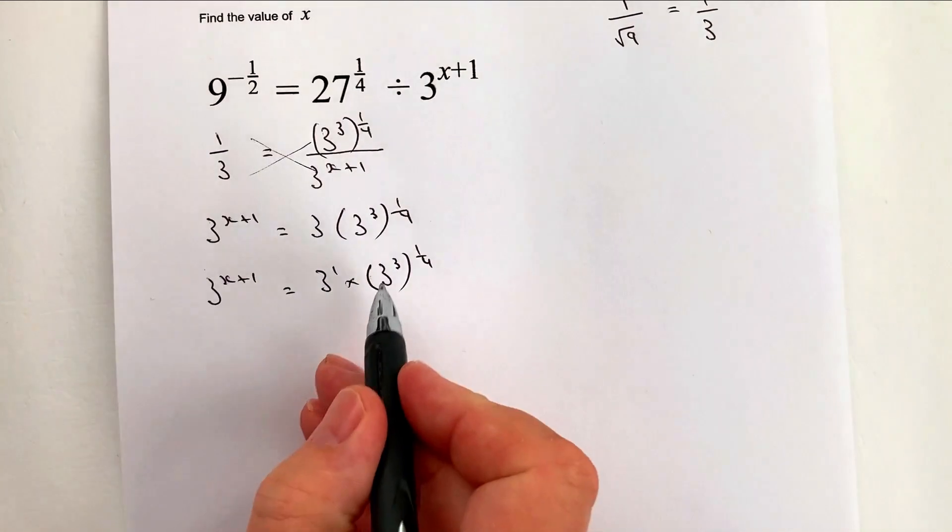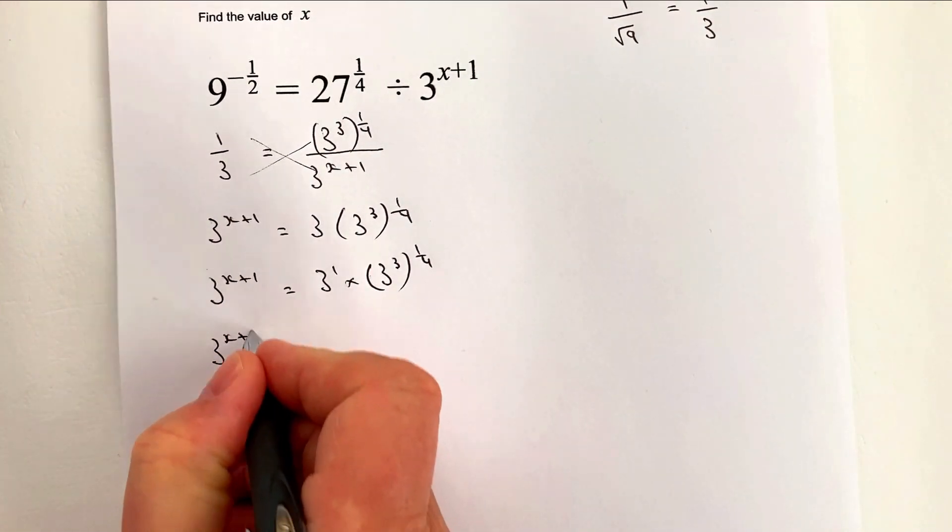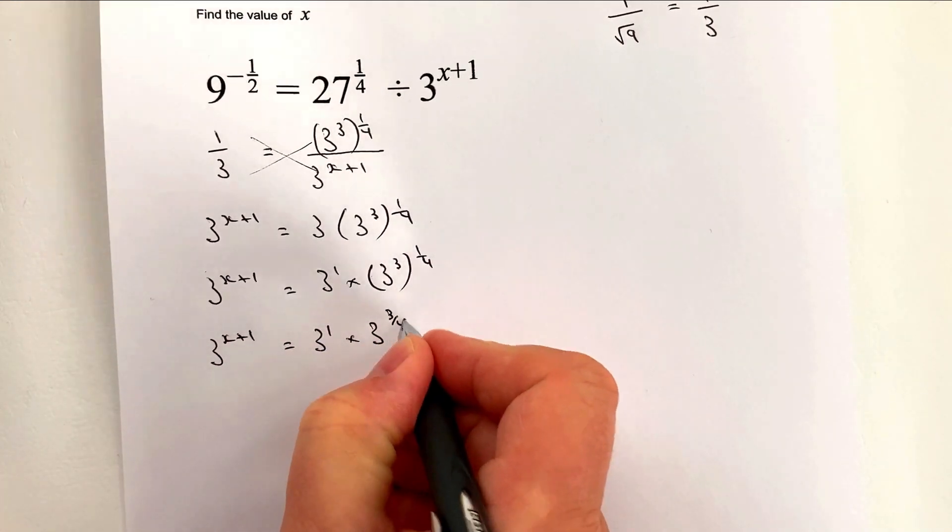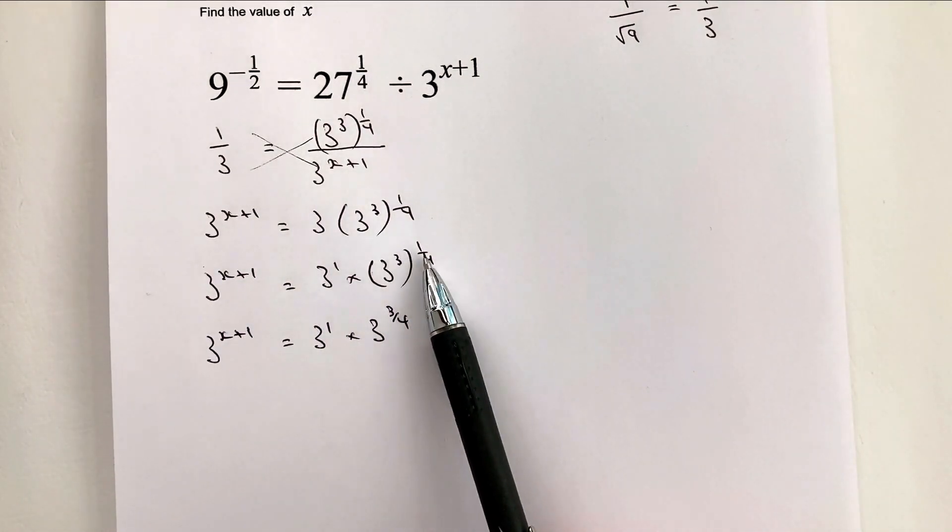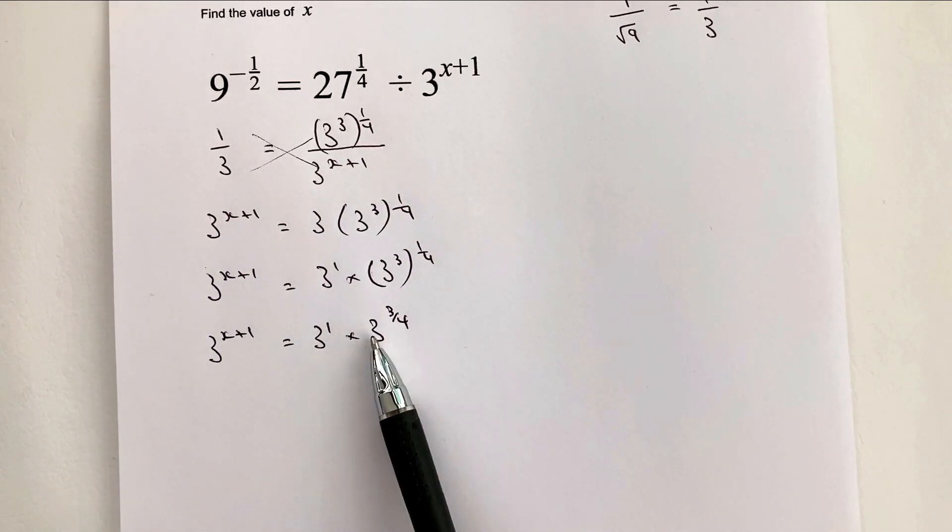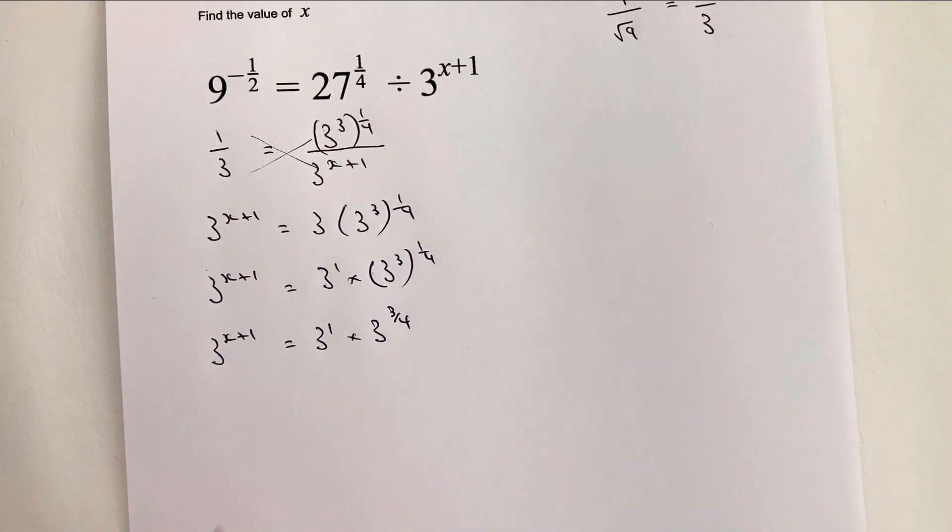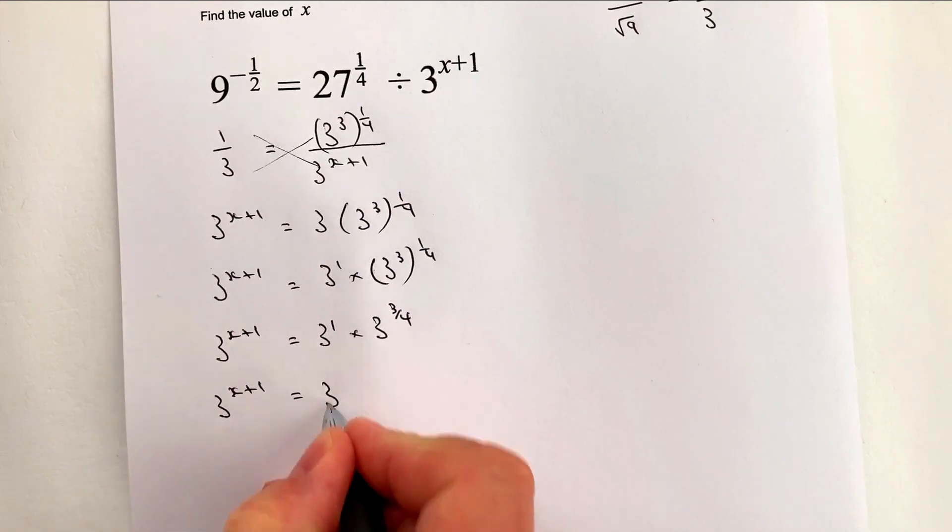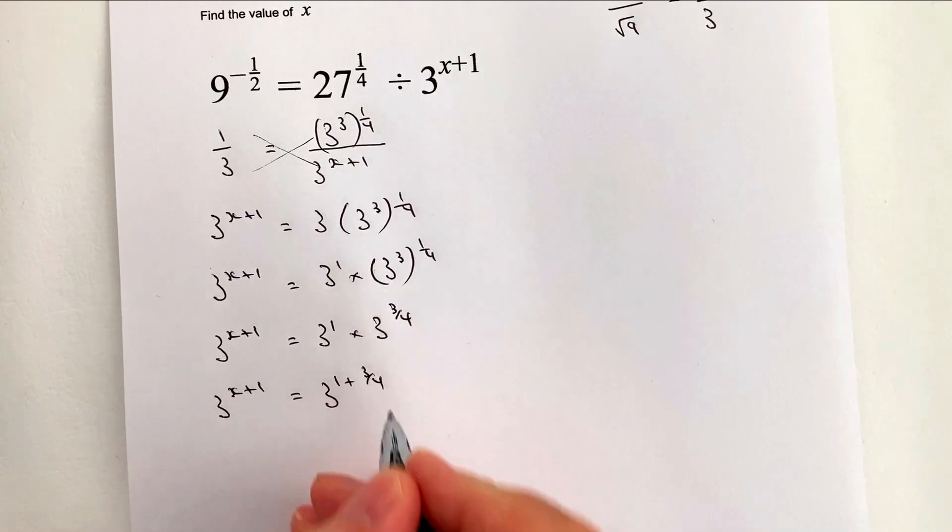So because I'm multiplying these two together. So I've got 3x plus 1 equals 3 to the 1 times 3 to the power of 3 quarters. So I've multiplied these two indices together. So when we are multiplying base numbers together, we add the indices. So by inspection, I can basically see this is 3x to the 1 equals 3 times, and then it's 1 plus 3 quarters.